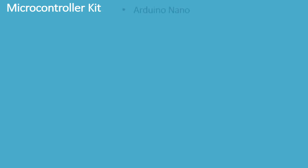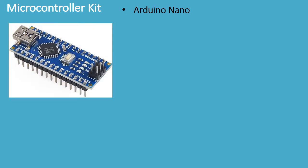Now let's look at the microcontroller kit. This is something we're going to need to use along with the computer every time we have a class session, so make sure that you have it with you for every class. First, there's the Arduino Nano, which we've already looked at a little bit.